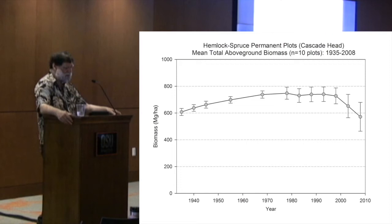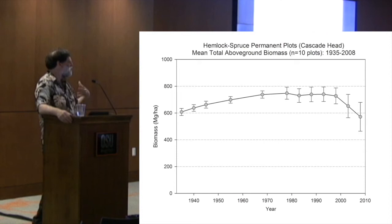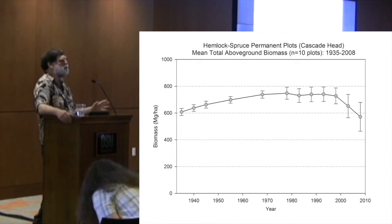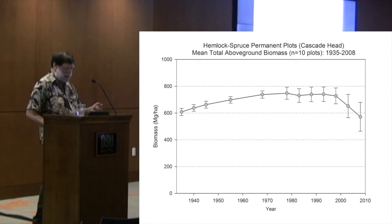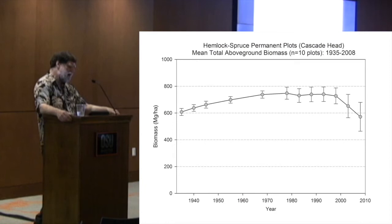Looking at the average of all the plots for biomass through time, up to about the late 1990s it's acting exactly the way classic ecosystem ecology theory tells us — basically that at some point input through production will be offset by mortality and the system will be in a steady state. The trouble is it didn't stay in that state for very long. Maybe it'll go to a new steady state, maybe it'll bounce around — that's what will be interesting to watch in the future.